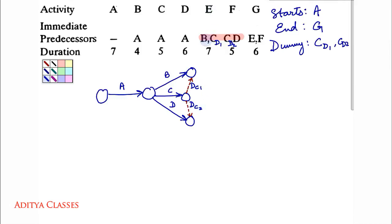So E was waiting for B and C. Here we have B. We do not have C but rather we have pulled C. We have pulled C through a dummy to this point. So here we have B and C. We can have E.